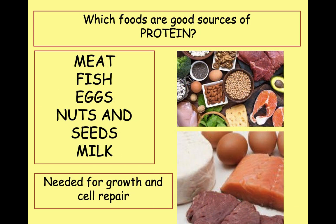Next we're onto proteins. Proteins are found in meat, fish, eggs, nuts and seeds, and milk. They're needed for growth and repair in your body. If you're young, you're doing a lot of growing, so you'll need a lot of protein to make sure you grow healthily. On a day-to-day basis your cells get damaged — from falling over or simply because older cells need repair. Proteins in your body are broken down into amino acids, which are needed to repair damaged cells and for building new proteins, which helps you grow. You make new proteins, build new cells, and grow.